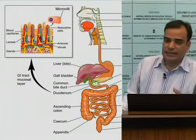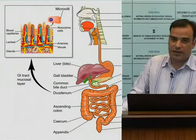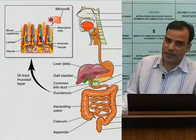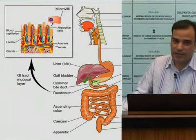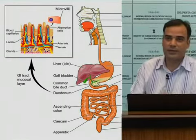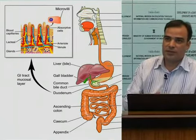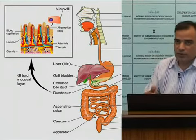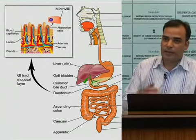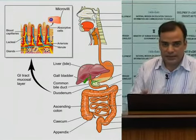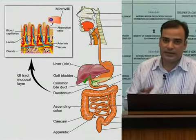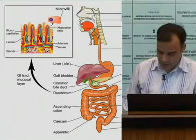Let us now look at the specific enzymes secreted in our digestive tract. Salivary amylase is the enzyme present in our saliva. Pepsin is a proteolytic enzyme that digests proteins and is secreted by the stomach. Trypsin, chymotrypsin, and carboxypeptidase are three proteolytic enzymes secreted by the pancreas into the intestines. The pancreas also secretes pancreatic lipase, which digests fats, and pancreatic amylase, which is required for the digestion of carbohydrates.